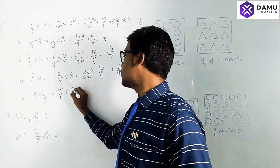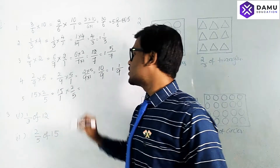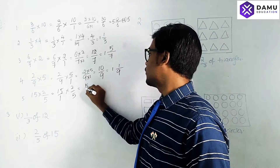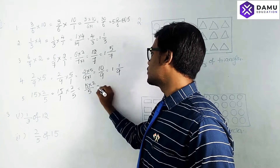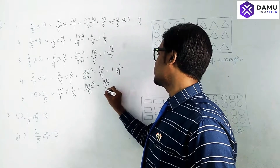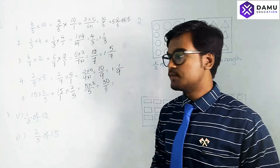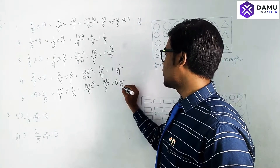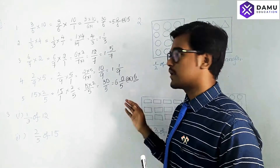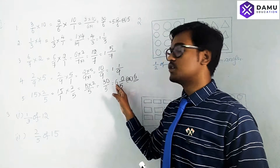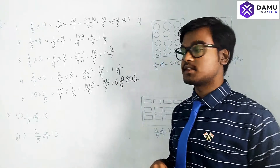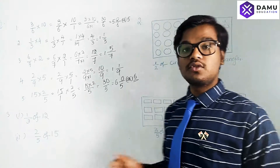Next: 15 × 2/5. Write 15 as 15/1. So 15 × 2 = 30 by 5. 30/5 = 6 with remainder 0, so we can express it simply as 6. This is the way to express it as a mixed fraction, because 5 × 6 = 30 and 30 + 0 = 30.